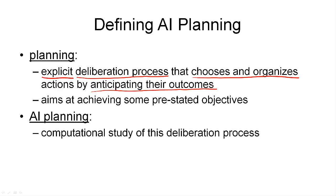The result of anticipating outcomes is either what we want or don't want. The process aims at achieving some pre-stated objectives — things we want to have true in the world. By anticipating the outcomes, we can compare the world states as they will be when we execute an action to the ones in which our objectives are satisfied. So that is what we mean by planning: an explicit deliberation process that chooses and organizes actions by anticipating their outcomes, and that aims at achieving some pre-stated objectives.